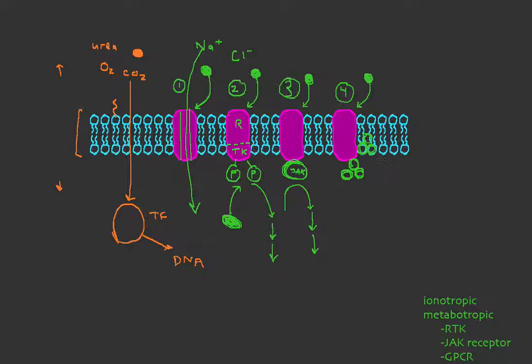Now the alpha subunit typically binds with GDP, but when the receptor is turned on by activation by a ligand, the alpha subunit prefers to bind with GTP.